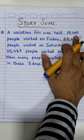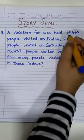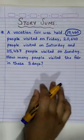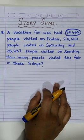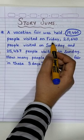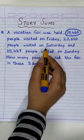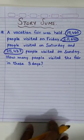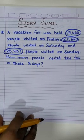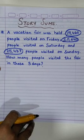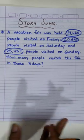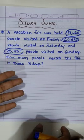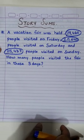First of all, encircle the numbers — I'll tell you why later. Let's continue reading. 19,460 people visited on Friday; 20,640 people visited on Saturday — circle that number too; and 25,437 people visited on Sunday. How many people visited the fair in these three days? We have to find the total number of people who visited the fair in three days, so we will add.